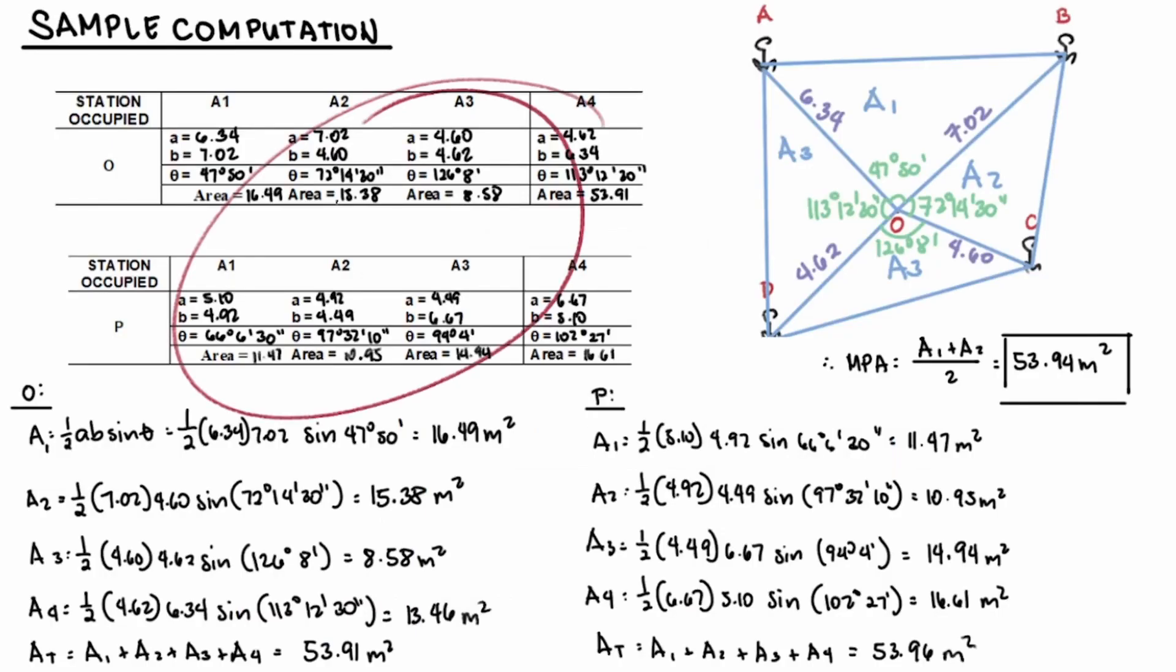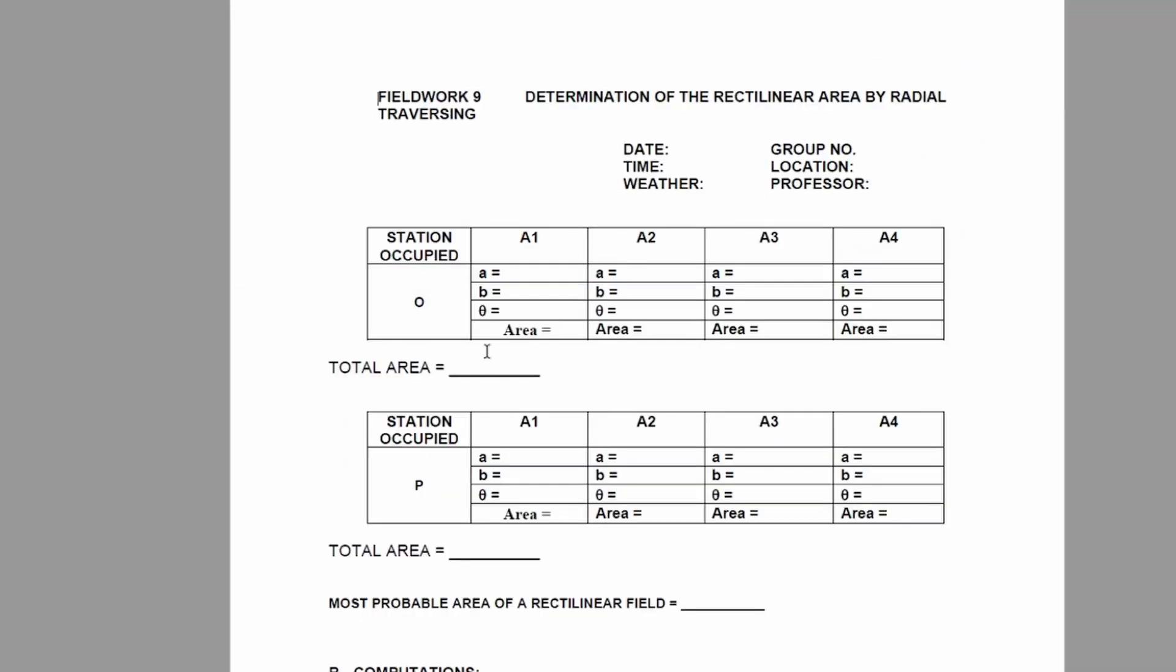Once again, A and B are the sides. Theta is the included angle of each triangle. Write the computed area of each trial and the most probable area over here.